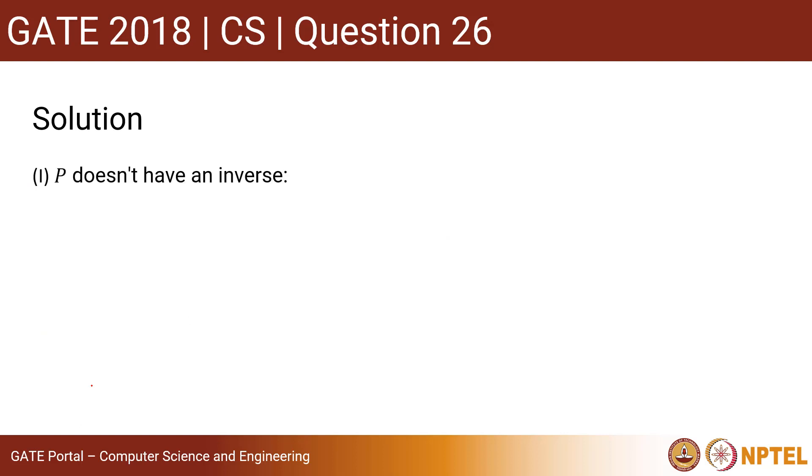Let's consider the first statement in the question: P does not have an inverse. P will not have an inverse if determinant of P equals 0. We know that the formula for inverse of a matrix is adjoint of matrix divided by determinant of that matrix. If determinant of that matrix is 0, this will never exist, so A inverse will never exist.